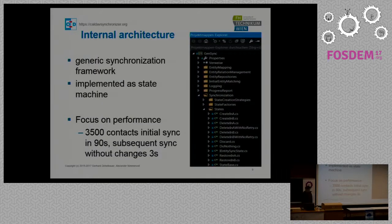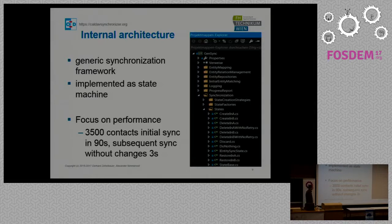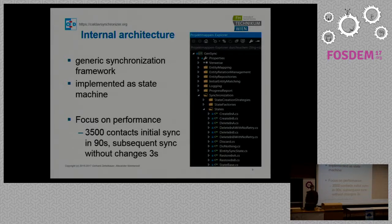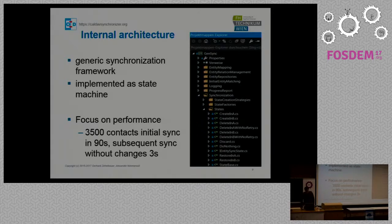The internal architecture is implemented as a generic synchronization framework, so it's not limited to CalDAV or CardDAV sync. We can sync arbitrary entities which are versioned with server entities. It's implemented internally as a state machine with a rather generic architecture, and the focus is on performance. For example, it's possible to sync 3,500 contacts initially in 90 seconds. The limiting factor is the Outlook object model — we tested a commercial Outlook add-in which needed nearly one second per entity, so that would have taken one hour for the initial sync. Subsequent syncs without any changes take around three seconds.